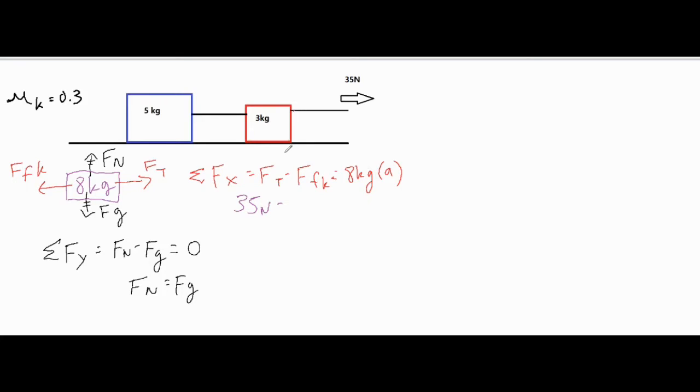The force of kinetic friction is always mu times normal force. So mu, the coefficient of kinetic friction is 0.3, according to our setup. And our Fn is equal to our Fg. So Fg is mg, which is mass times 9.8.